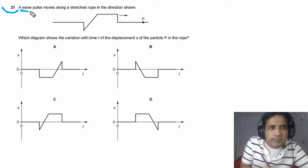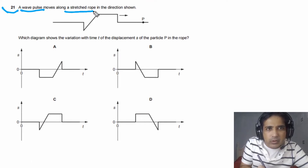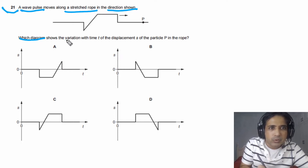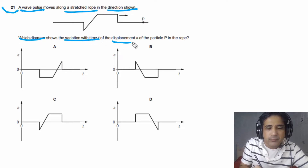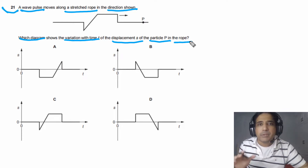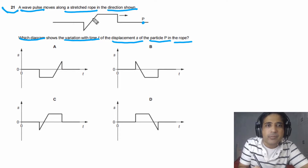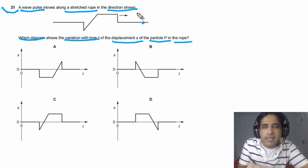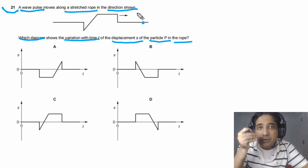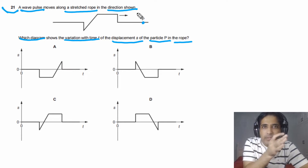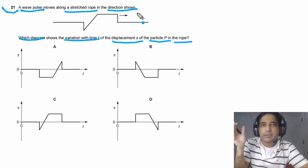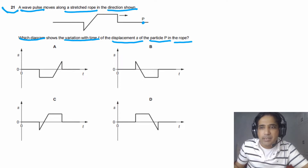For question 21, it is given to us a wave pulse moves along a stretched rope in the direction shown. Which diagram shows the variation with time t of the displacement s of the particle P in the rope? Let's try to understand this one step by step.